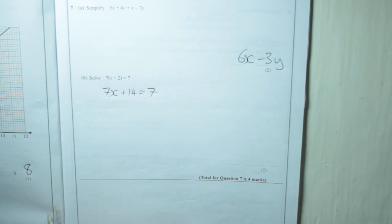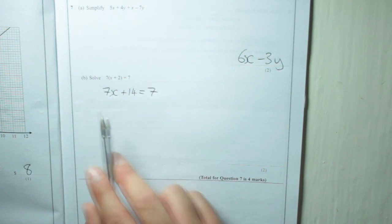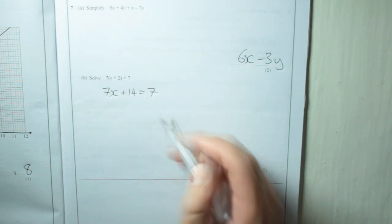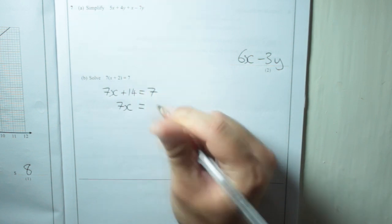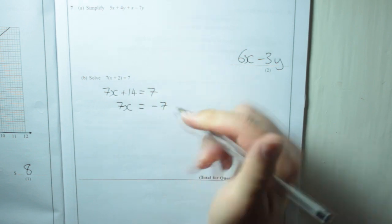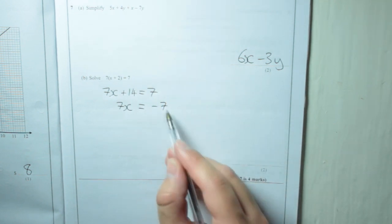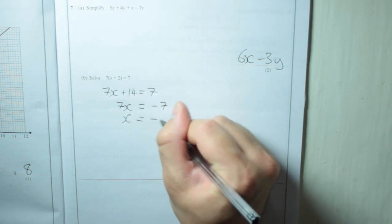So now you need to take away 14 to get the x's on their own. You do that from both sides. So 7x, I've taken away 14 from this side, the left side. Now I'm going to take away 14 from the right-hand side, which will give me minus 7. So 7x is equal to minus 7, therefore x is equal to minus 1.